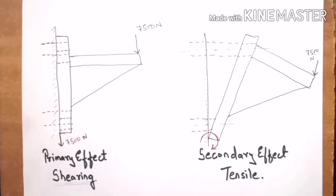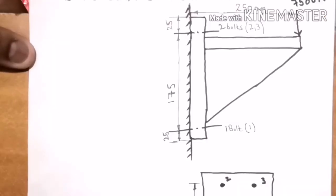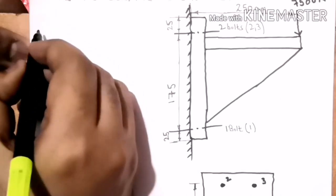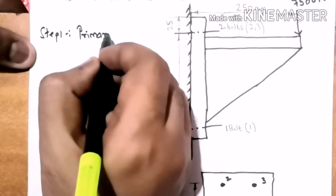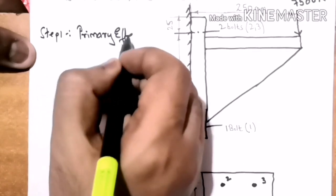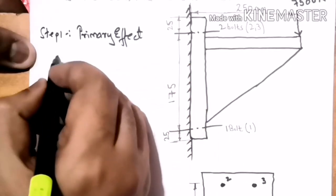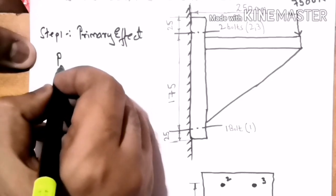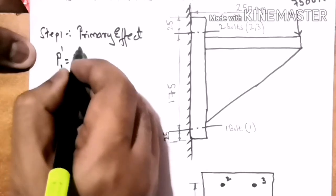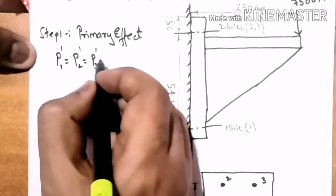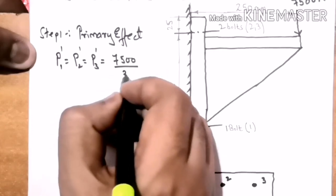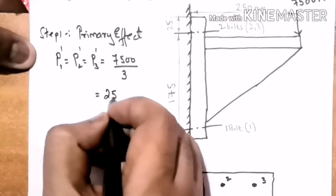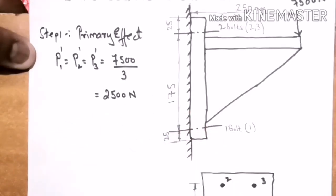Coming back to our problem, the first step is to determine the primary effect of the loads. Step 1: Primary Effect. The primary effect will be the same on each bolt, so P1' = P2' = P3' = total load divided by number of bolts. With three bolts, the shear on each bolt is 2500 N.